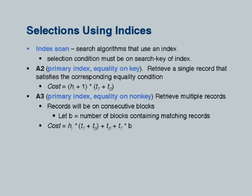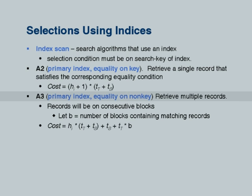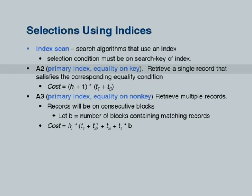You search down the B+ tree index and find the record or set of records. This is called an index scan, but the cost depends on whether the index is a primary or secondary index, and whether the condition is an equality on a key — meaning only one record will be retrieved — or an equality on a non-key meaning multiple records may be retrieved, or a range selection again meaning multiple records.